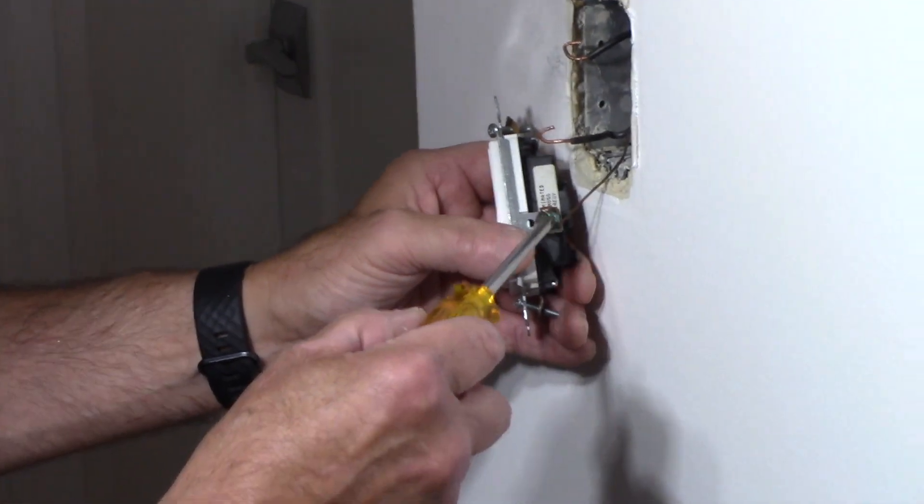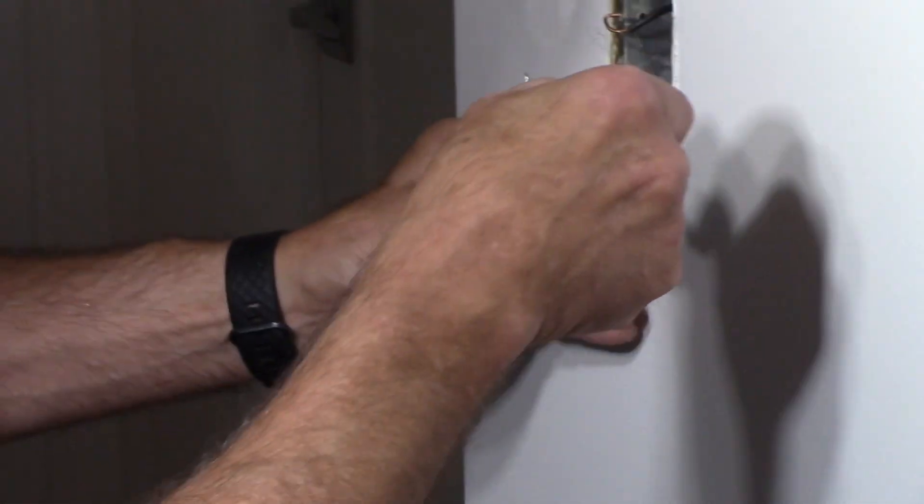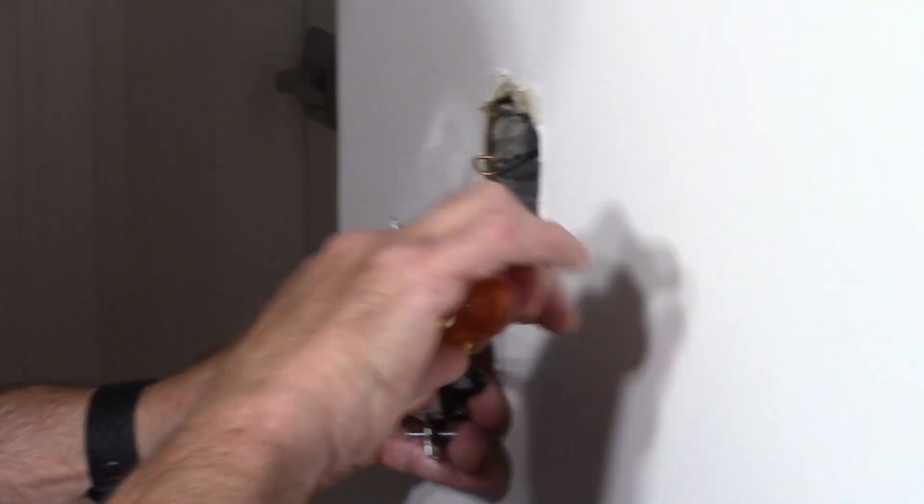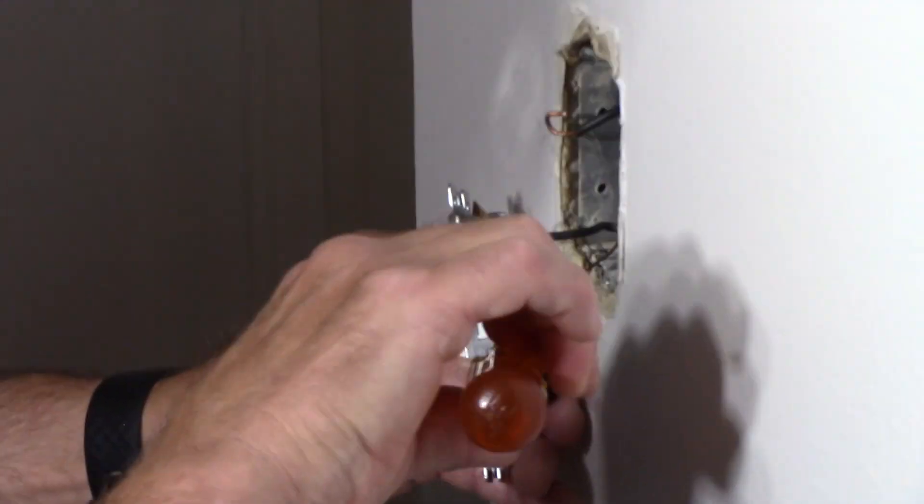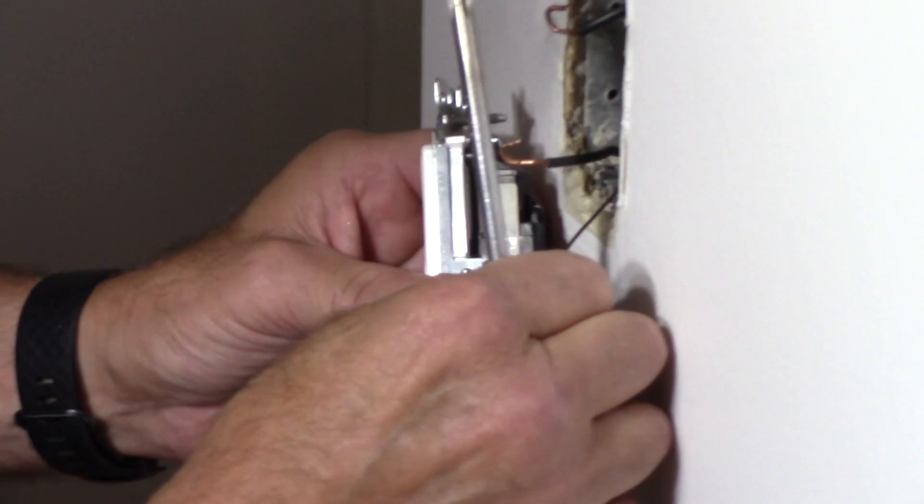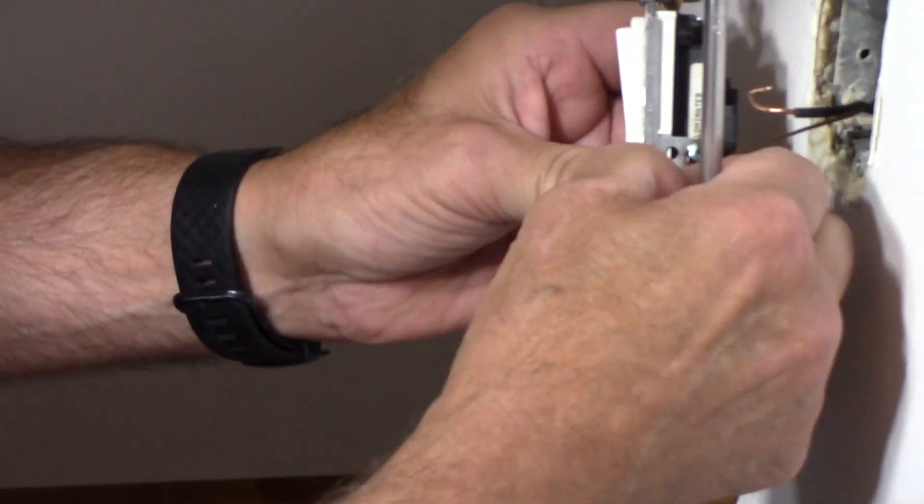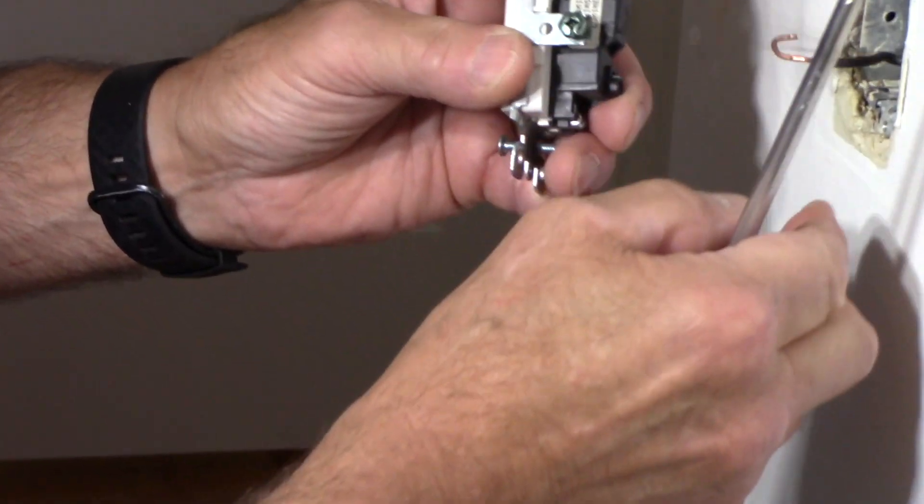Next we're going to come around to our ground screw right here. And we're going to remove the screw for the ground wire. And then we'll just take this off just like that.